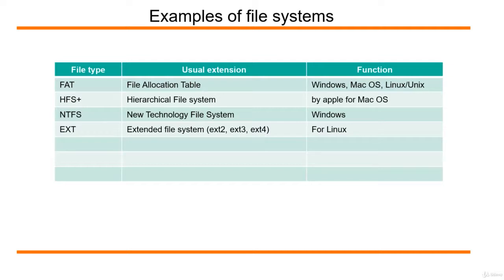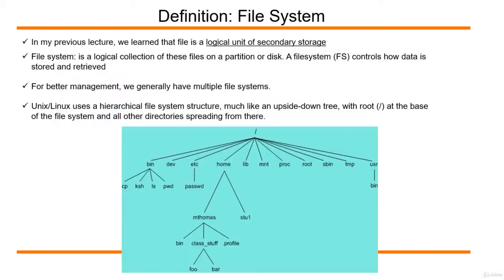Using a command called df, you can find out the specific file system type — I will explain that once we cover the df command. In summary, a file is a logical storage unit, and a logical collection of such files is a file system. In the next lecture we are going to talk about how a file system is created from a theoretical point of view.